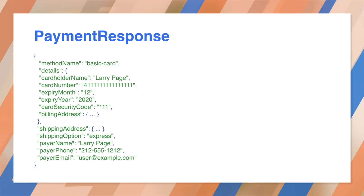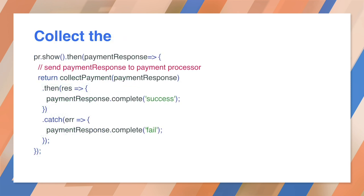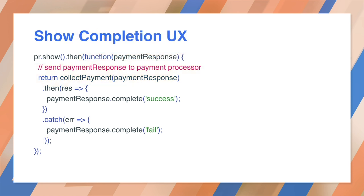For credit card payments, the response is standardized. For non-credit card payments, such as Google Pay, the response will be documented by the provider. Next, you should check that the payment is valid. Send the information to your payment processor for processing. The UI will show a spinner while the request takes place. So how do we remove the payment UI? After we click payment, even if it fails, call paymentresponse.complete. You can include a message to the user. This tells the browser that the payment is complete and allows the app to notify the user of the result.